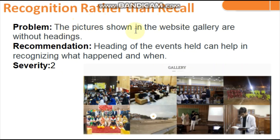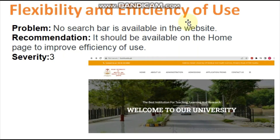Sixth heuristic: Recognition Rather Than Recall. The problem is that pictures in the website gallery are without headings, so users must recall what type of events were held when the pictures were taken. Recommendation: adding event headings would help users recognize what happened, increasing visibility. Seventh heuristic: Flexibility and Efficiency of Use. No search bar is available on the home page. Recommendation: a search bar should be added to the home page to make user navigation more efficient.